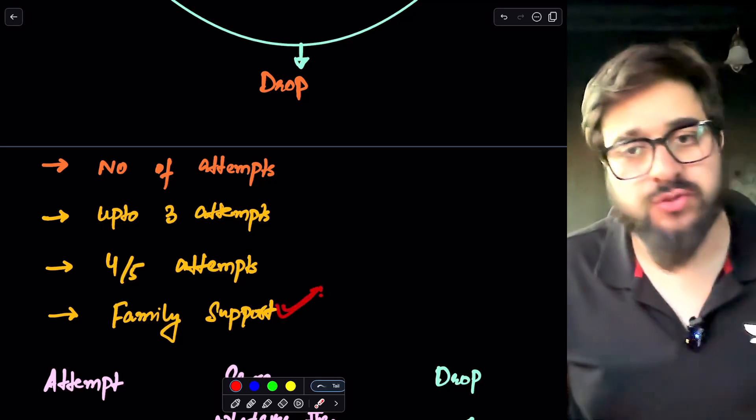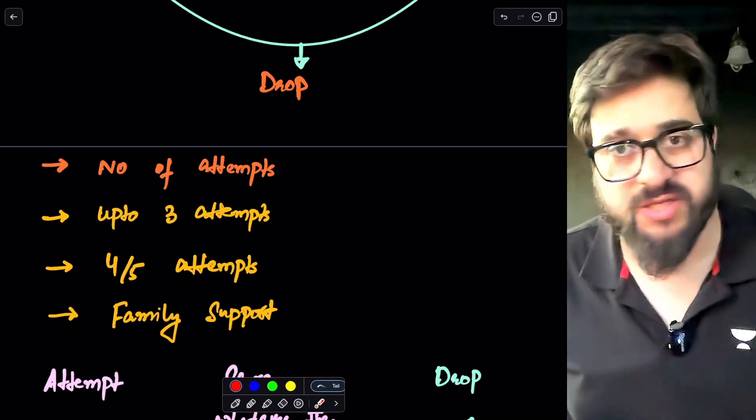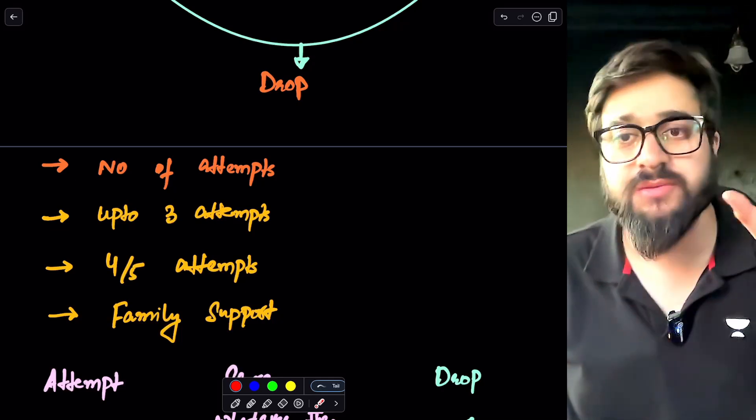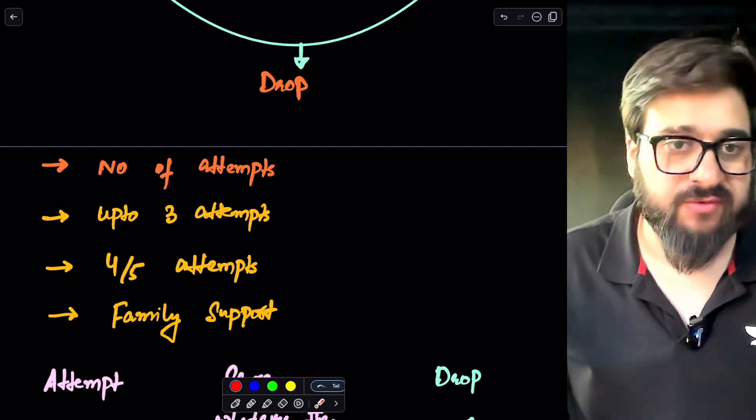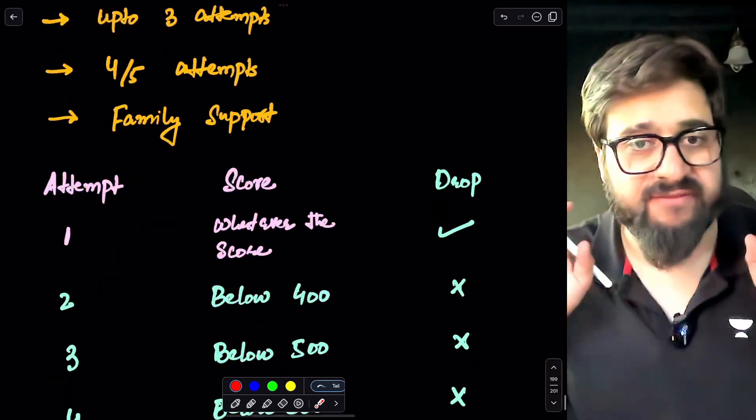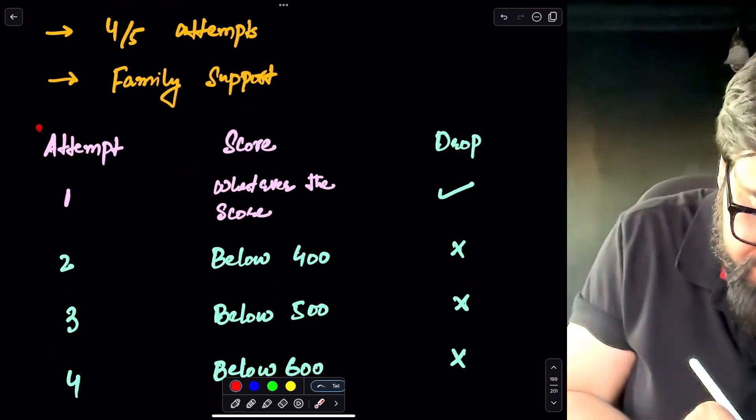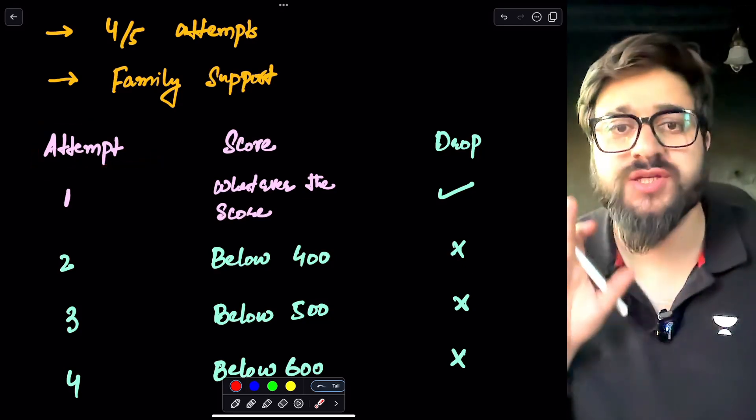And when it comes to the family support, as I said, that if you are not having the family support, the family is telling you that the maximum attempts you can have is two or three. So after that, you cannot take the aim for the drops. In that case, you can basically leave. Now my dear friends, the first thing is let's talk about this data over here.